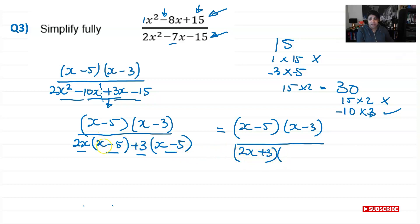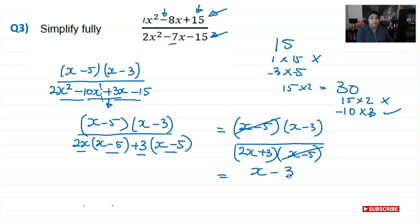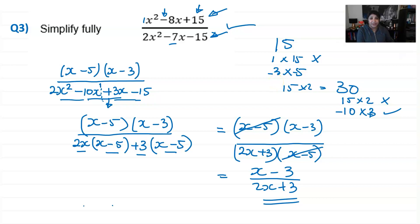So the full expression is (x − 5)(x − 3) over (2x + 3)(x − 5). The (x − 5) brackets cancel, leaving a final answer of (x − 3) over (2x + 3). That's how you simplify this question. Thank you for visiting — please remember to subscribe, and bye for now.